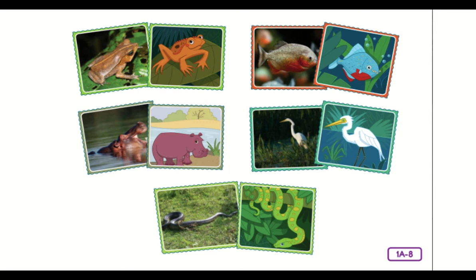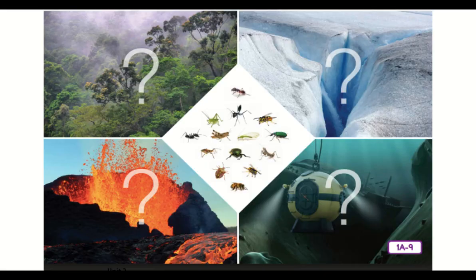Taxonomists believe that all of the vertebrate animals on Earth can be classified into one of these five animal groups: fish, amphibians, reptiles, birds, and mammals. In the fish group, there are three different fish classes. Fish also have the largest number of species among vertebrates. Even though there are more than 60,000 known species of vertebrates on Earth, there are nearly a million and a half invertebrates, and a million of those are insects. Scientists continue to discover thousands of new insect species each year.